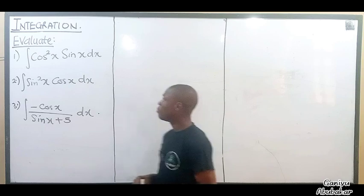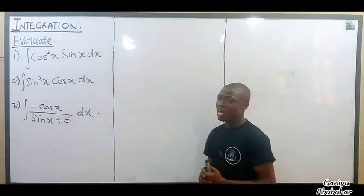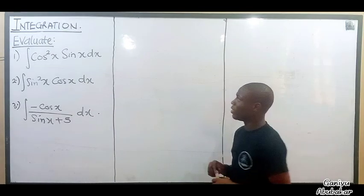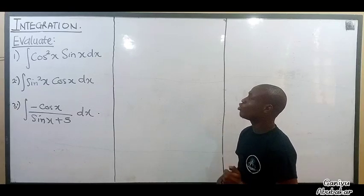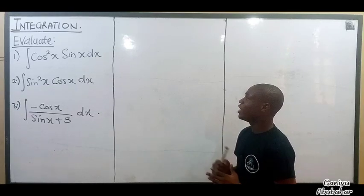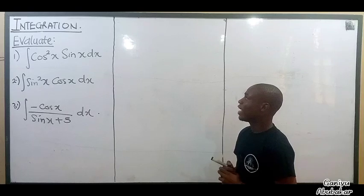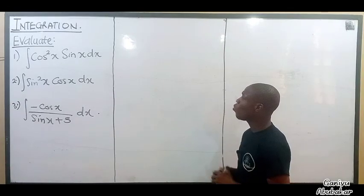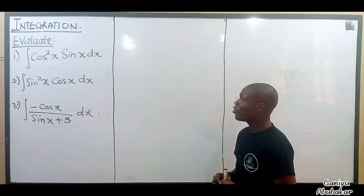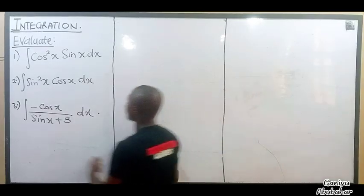Alright, let's take a sample problem and solve this together. Listen first — I have number one to be the integral of cos squared x times sin x dx. I'm going to integrate that. So what do you do here? What are the first steps? Alright, let's start with number one.